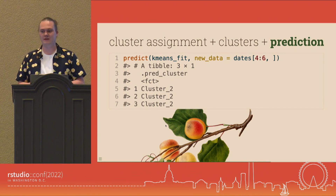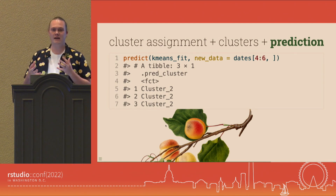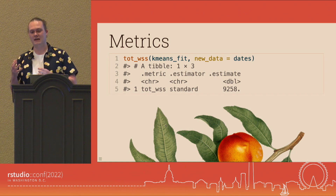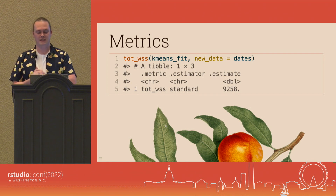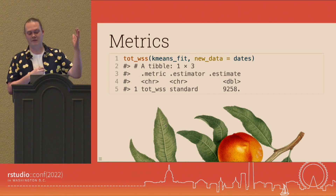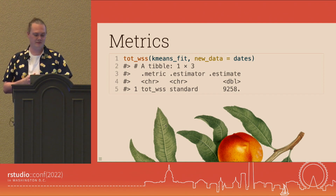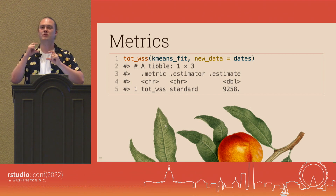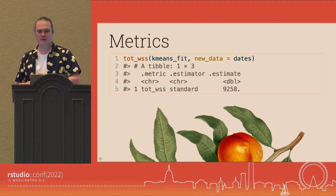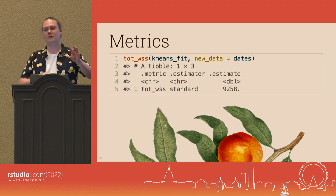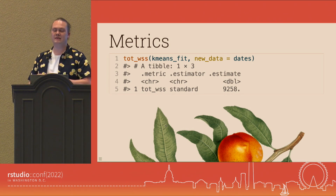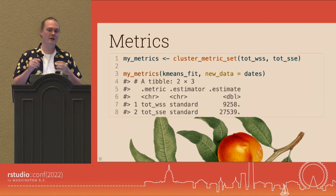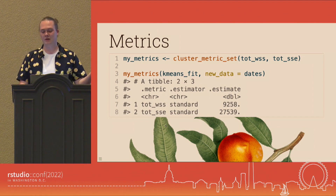While metrics can be quite hard to calculate for clustering, there still are a number of metrics we'd like to support. In the same style as the yardstick package, we have metrics specific to cluster fits. Here we have a function that calculates the total within-cluster sum of squared errors. To calculate that, it's not just a metric comparing an outcome to a ground truth - instead we calculate a metric based on the centroids and the observations, summing up how far the points are from their clusters. In the same style, if we have multiple metrics, we can combine them into a cluster metric set to calculate multiple metrics at once.